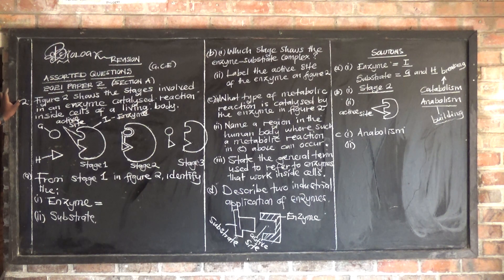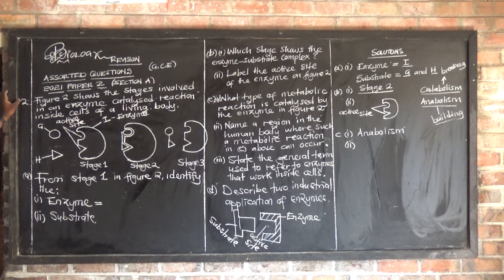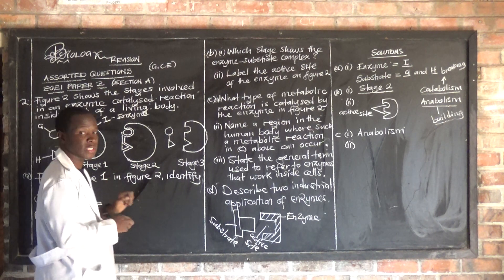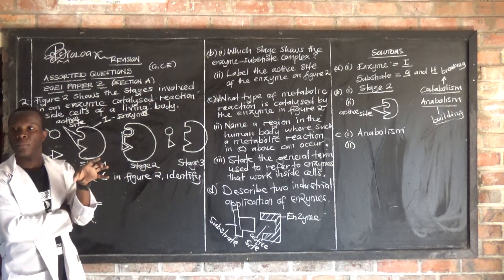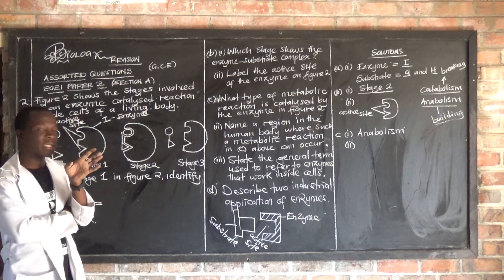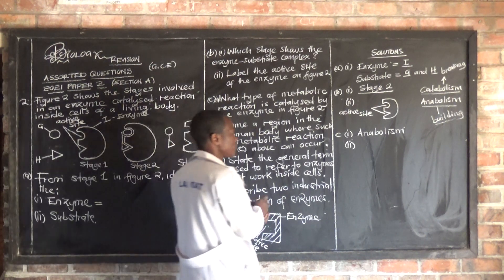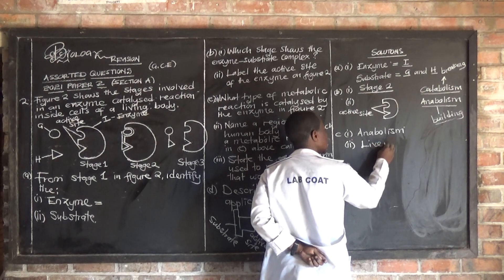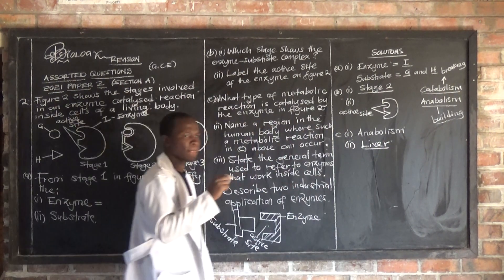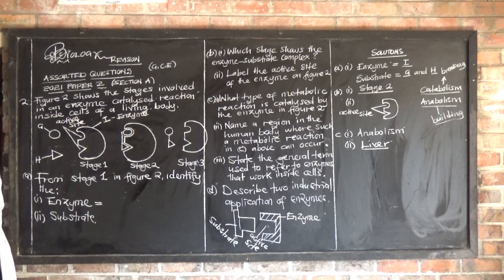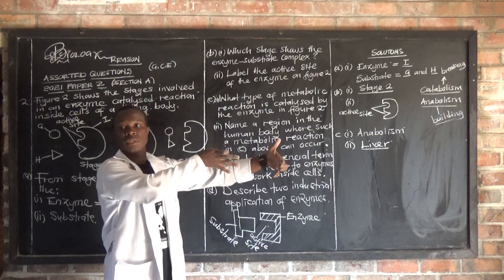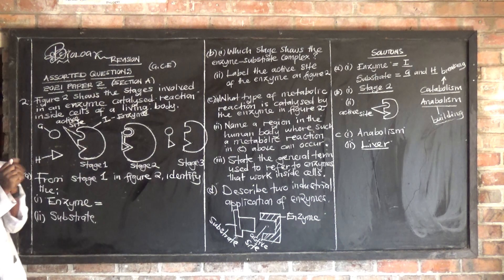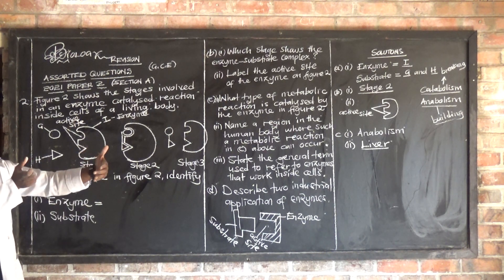Roman numeral two asks: in the human body, where can such a metabolic reaction — anabolism — occur? They want you to mention a part or region in the human body where anabolism takes place. The best answer is the liver. In the liver, you have the metabolism of carbohydrates, where excess glucose molecules are synthesized to form glycogen.